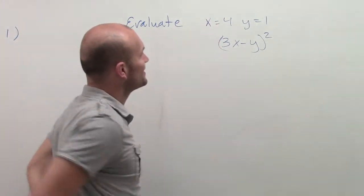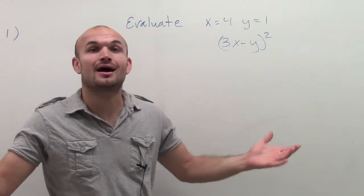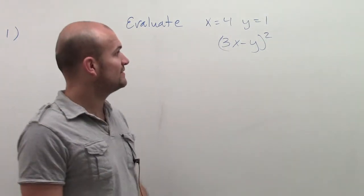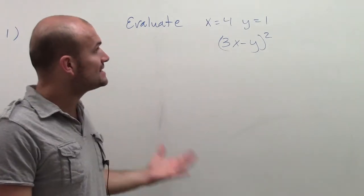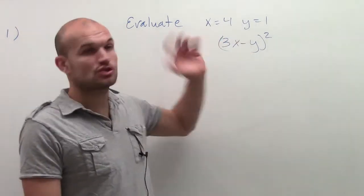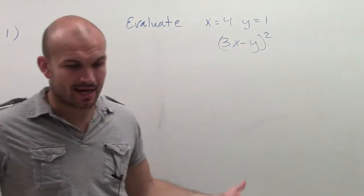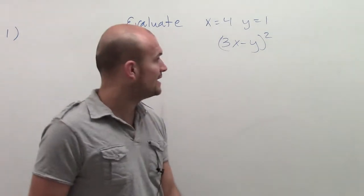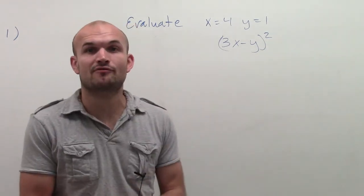So what I have here is a mathematical expression. Actually, it's an algebraic expression to be even more exact. What we have is 3 times a number minus y, minus another number squared. So that was an algebraic expression that we just translated into a verbal sentence.